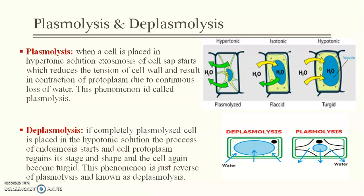Plasmolysis: when a cell is placed in a hypertonic solution, exosmosis of cell sap starts. When exosmosis starts, the cell wall can be removed and ultimately results in the contraction of the cytoplasm. The volume will shrink, and this process is called Plasmolysis.